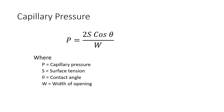Since pressure is the force over a given area, it can be written as capillary pressure P, expressed by the formula: P equals 2s cosine theta divided by w, where P is the capillary pressure, s equals the surface tension, theta is the contact angle, and w is the width of the opening.